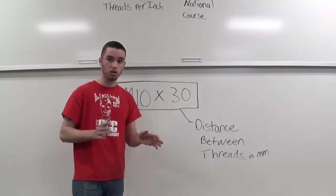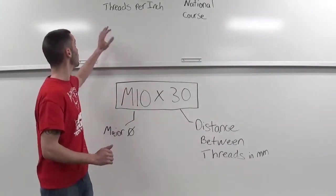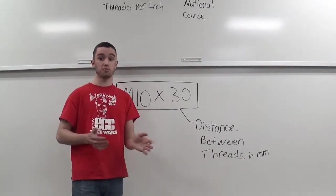Where the metric and the imperial are a little different is that we measure distance between threads in metric, and for imperial we measure threads per inch.